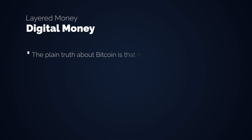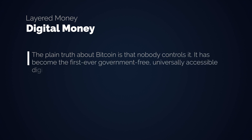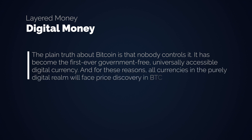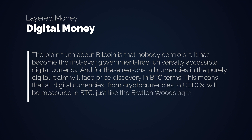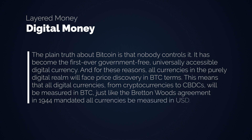The plain truth about Bitcoin is that nobody controls it. It has become the first ever government-free, universally accessible digital currency. And for these reasons, all currencies in the purely digital realm will face price discovery in BTC terms. This means that all digital currencies — from cryptocurrencies to central bank digital currencies — will be measured in BTC, just like the Bretton Woods agreement in 1944 mandated all currencies be measured in USD. The layered pyramid is actually much more complex by now, and we can only guess what layers will be added in a world in which money is now software.